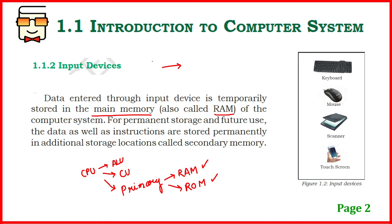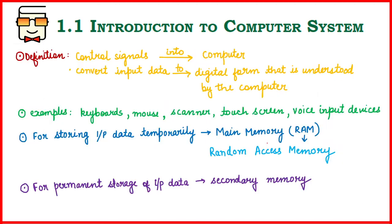Anything provided through an input device goes to the CPU, where it gets stored temporarily into the RAM. If you want to store something permanently, you need to use secondary memory, also known as secondary storage devices — we'll read about these in detail later. Now summarizing this lecture: this slide is very important for your notes. You can prepare complete notes from it and gain marks in your exam.